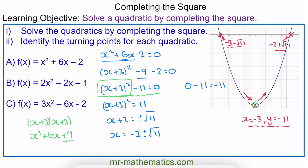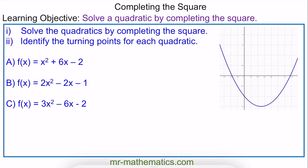Let's move on to question B. Again we're going to make the quadratic equal to 0, so we have 2x squared minus 2x minus 1 equals 0. We need to make the value of a — in this case 2 — equal to 1 to create a complete square. So we're going to factorise the left hand side to give two lots of x squared minus x, take away 1, equals 0.